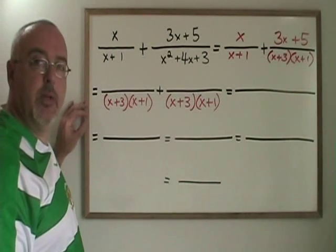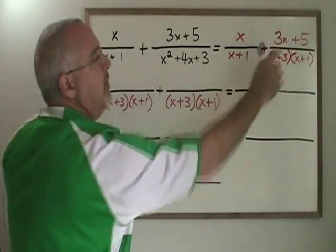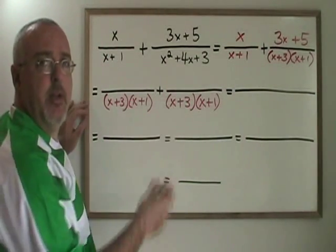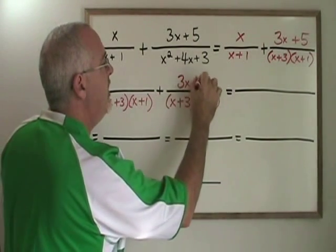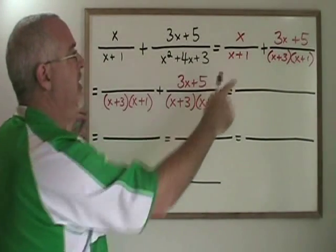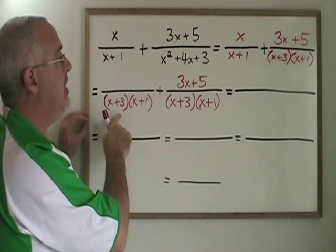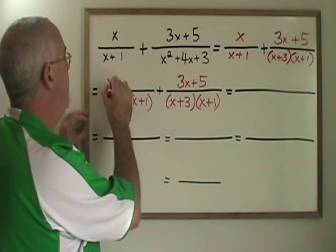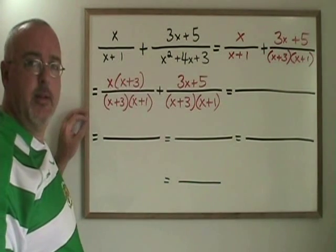Now we have to expand our fractions over the new common denominator. The fraction on the right was already over that denominator, so it does not change. It will still have three x plus five as its numerator. The fraction on the left, however, was multiplied by x plus three, so the top has to also be multiplied by x plus three.